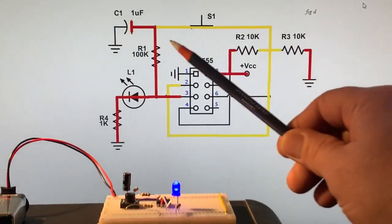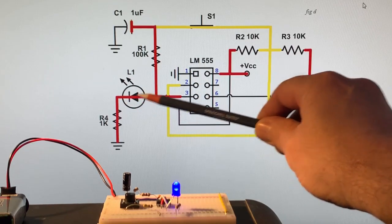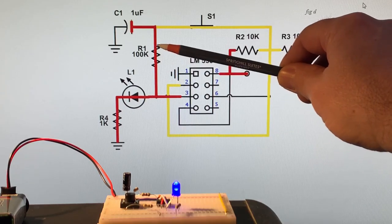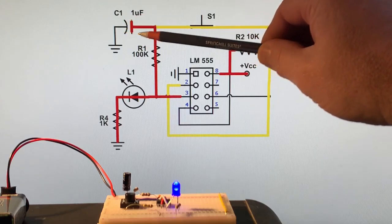At the same time, when the output of pin three, which is the supply voltage, comes out, it goes back through this 100k ohm resistor and begins to charge the capacitor to the supply voltage.